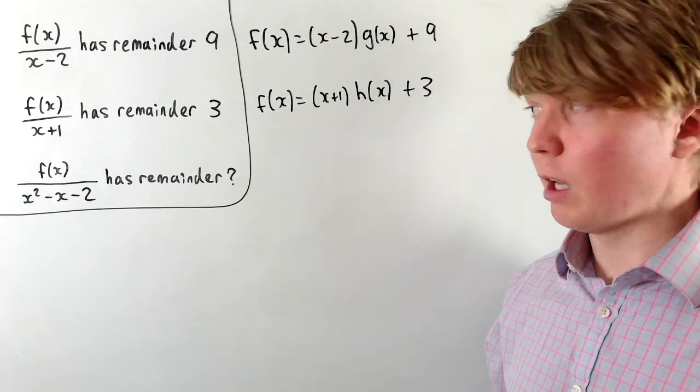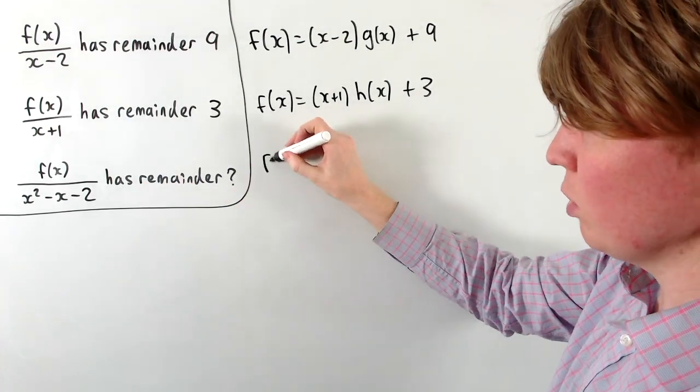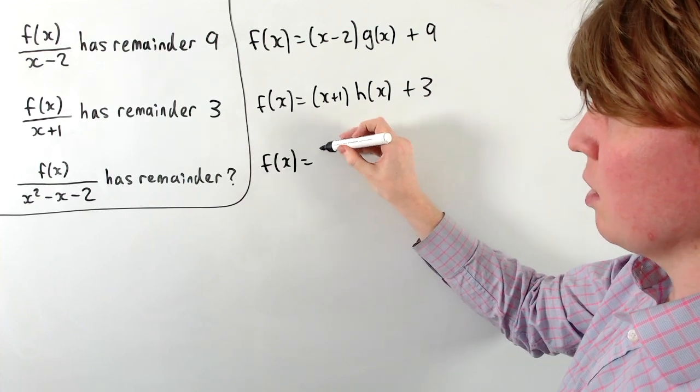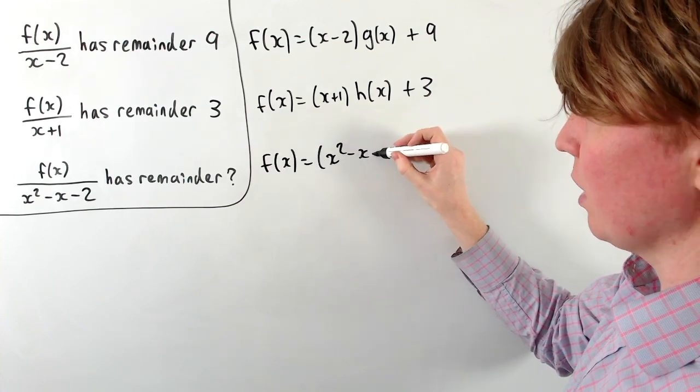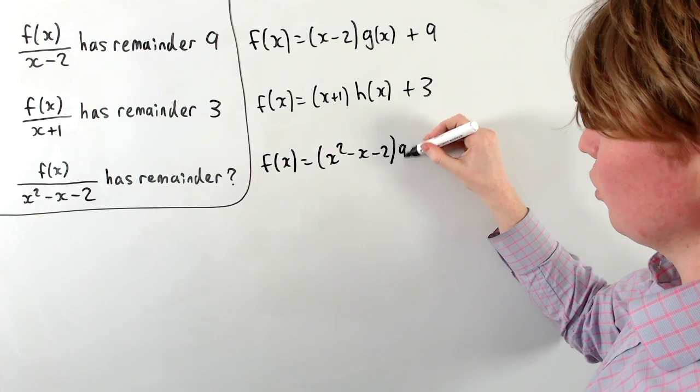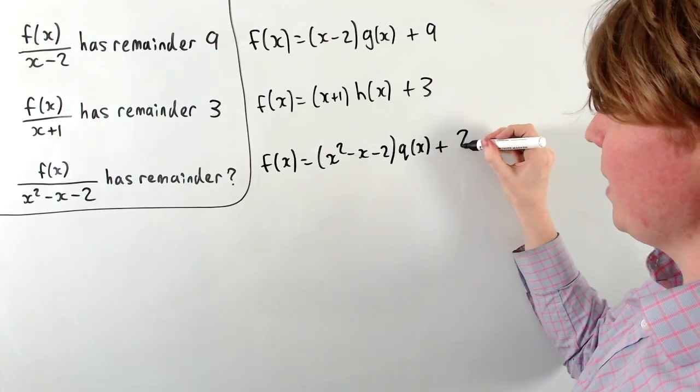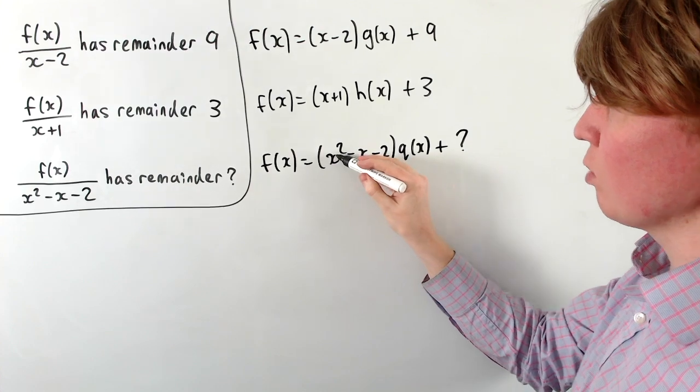Now the problem here is when we divide f(x) by this quadratic, so we want to write f(x) as this quadratic, x squared minus x minus 2 times, let's call this q(x), we want to know what the remainder is when we try and divide by this quadratic.